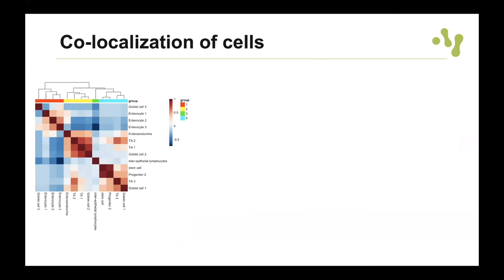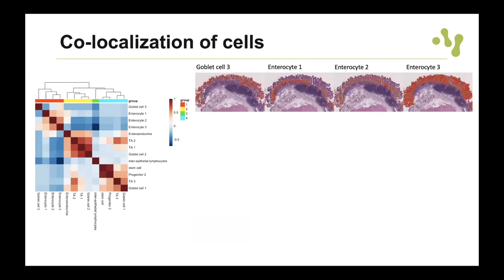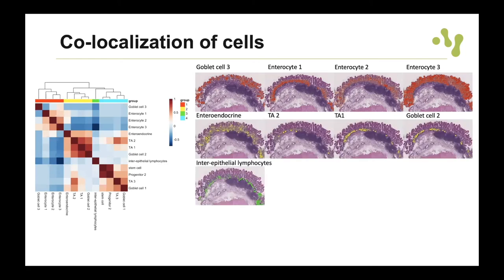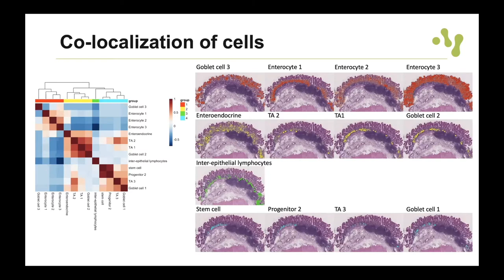Here is another example with about 13 different cell types collected from the intestinal epithelium. When mapped onto the small intestine, you can group cells by correlation — cells localized in the same area have a high correlation score, making it an easy way to find co-localized cell types. I could find four different groups in the intestinal epithelium: enterocytes at the top, amplifying cells beneath that, intraepithelial lymphocytes, and at the bottom stem cells and progenitor cells.